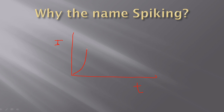At the output we will get peaks of high intensity. We will get these peaks in the output due to the Ruby laser emission.